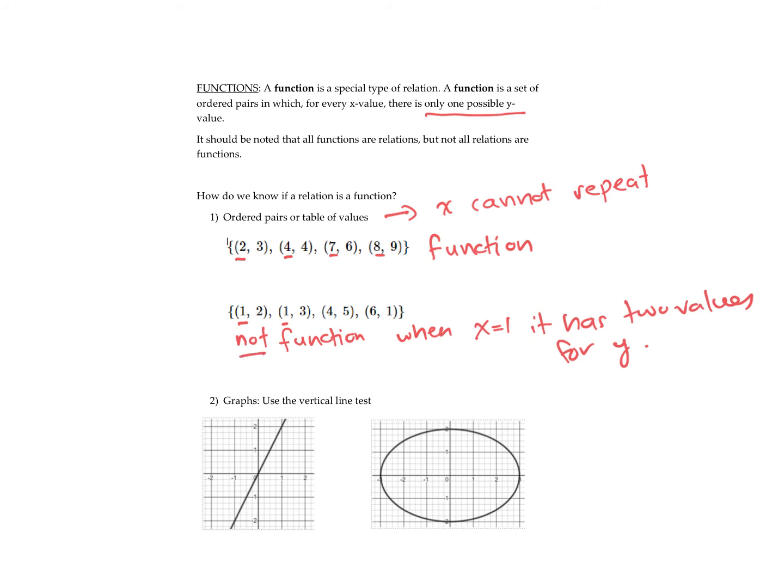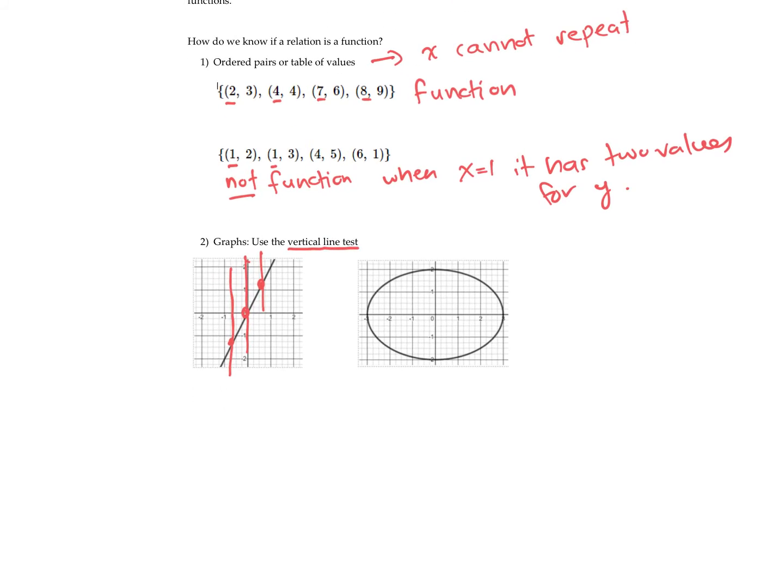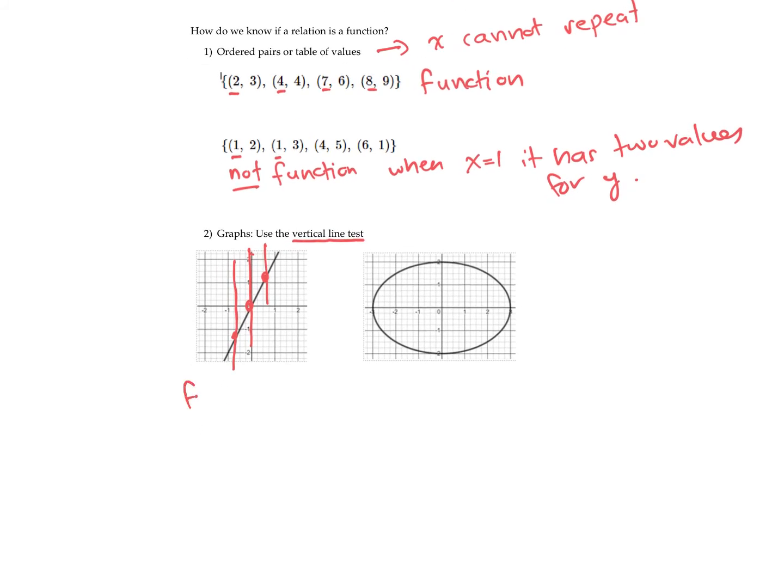If I have a graph, it's very easy. We use what we call the vertical line test. And the vertical line test means if I draw a vertical line anywhere through this graph, I will only cross at one spot. I won't cross the graph more than once. So this linear function is a function. This graph is not a function. Because when I do the vertical line test, I pass through more than one point. So this is not a function.